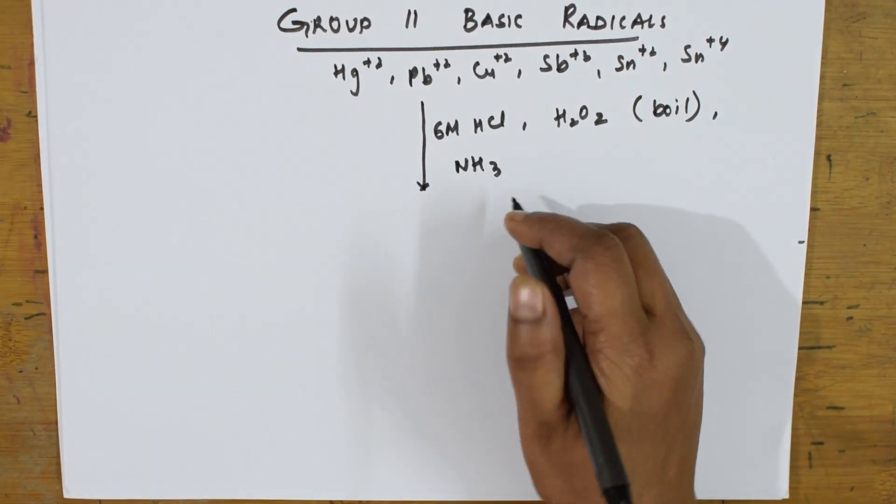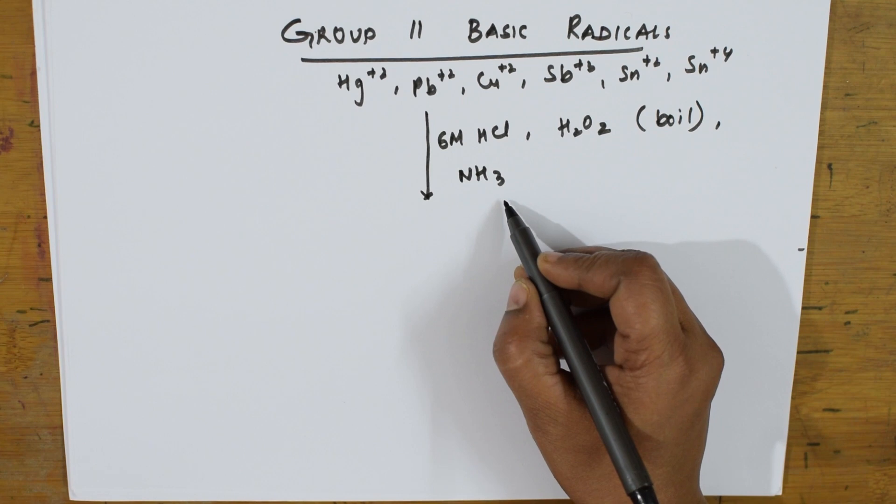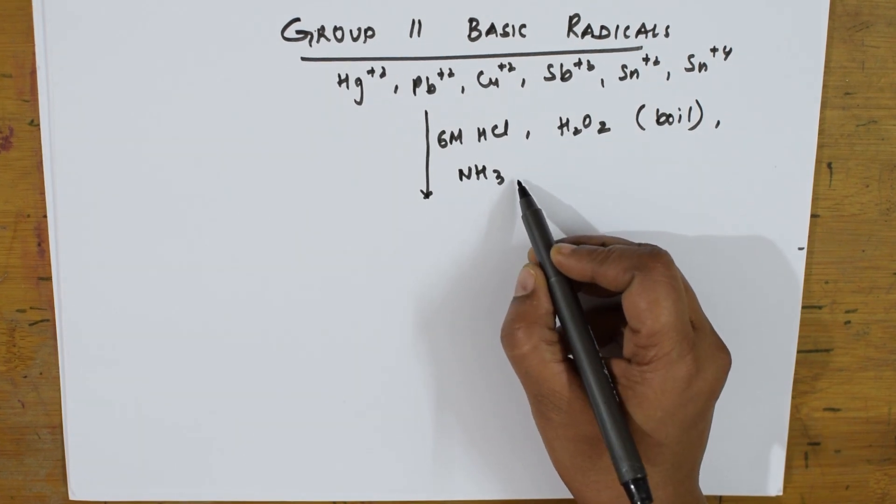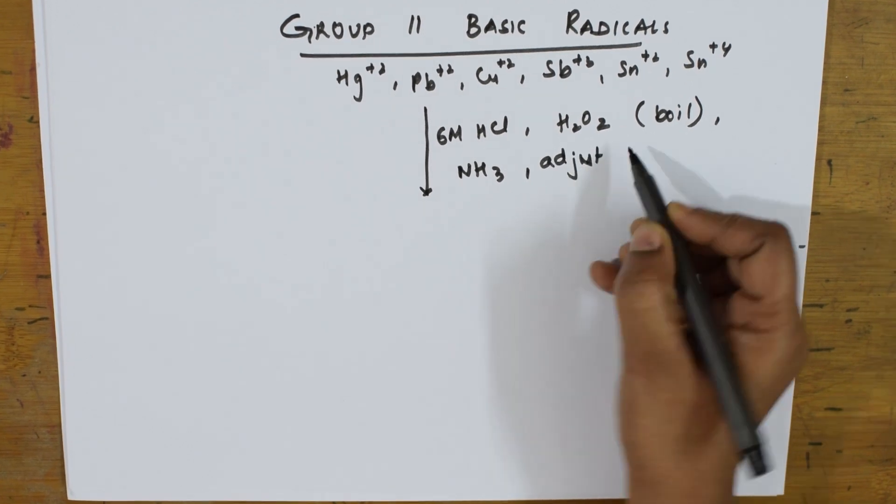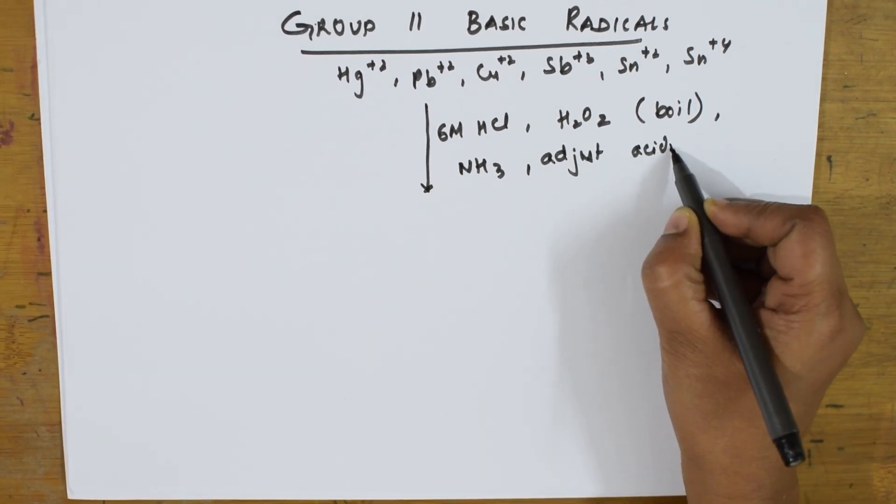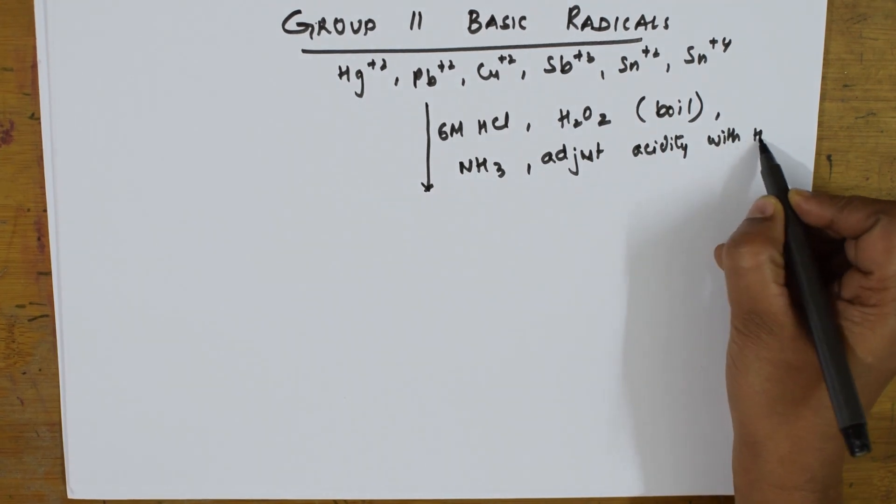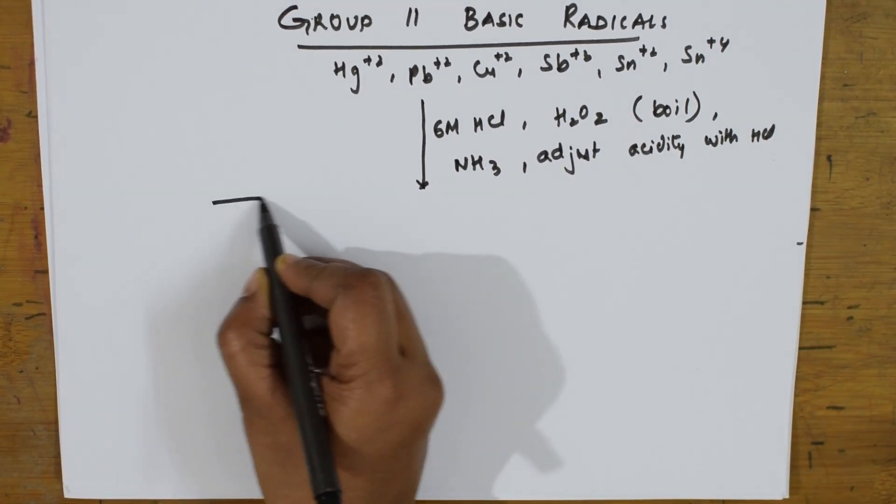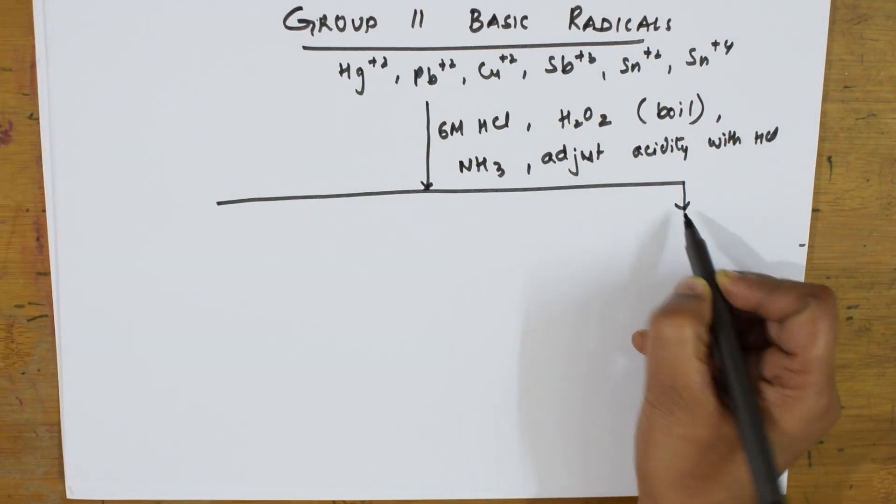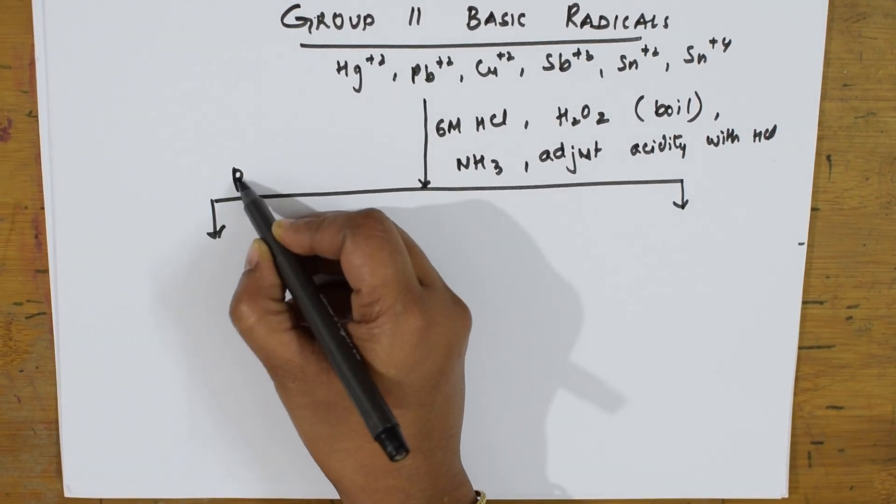I will tell you why. Because easily you can get the color deposition with ammonia solution. Then you will adjust the acidity with HCl. When you do all this, you will be getting, let us differentiate into two. One, you will be getting a precipitate. Here, you will be getting a filtrate.